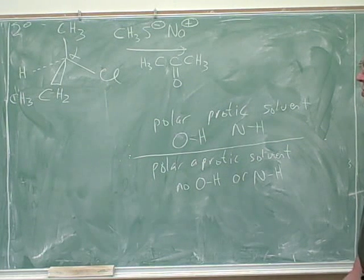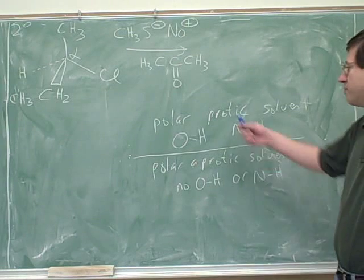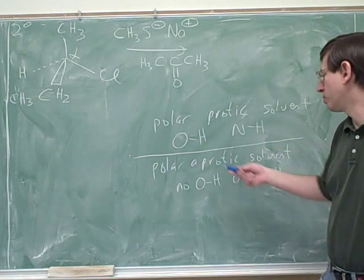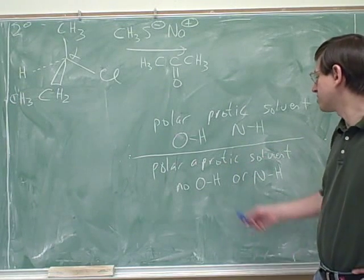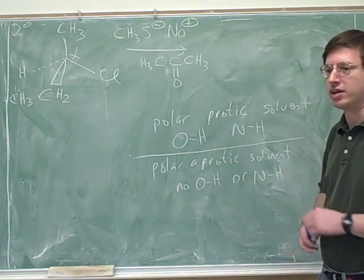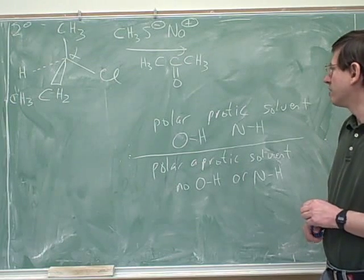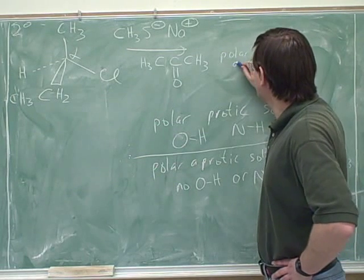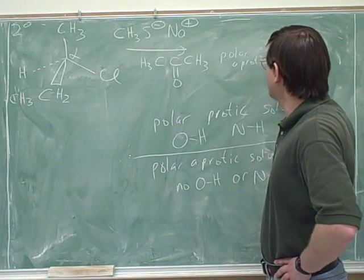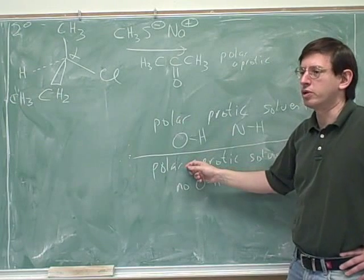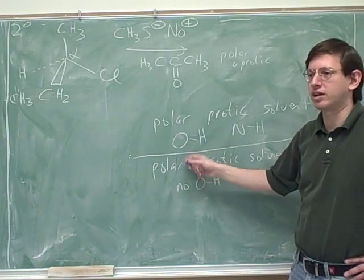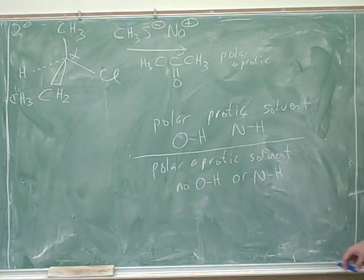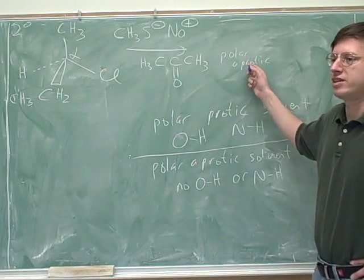Okay. So for our purposes, a polar protic solvent is one that has at least one hydrogen bonded to an oxygen or a nitrogen. And a polar aprotic is something that has no hydrogens on an oxygen or a nitrogen. Okay. So is this polar protic or polar aprotic? Polar aprotic. Polar aprotic. Notice that you can kind of leave out the word polar because both solvents are polar. We're only going to consider polar solvents. So the issue is just whether it's protic or aprotic.